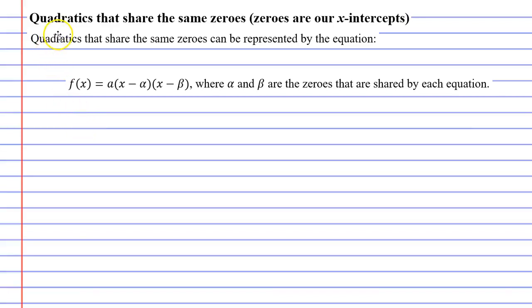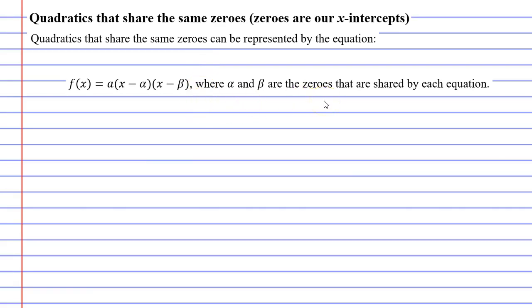In this video, we're looking at quadratics that share the same zeros. When we talk about zeros, it's the same thing as x-intercepts. Now, there are two parts to this video. In the first part, we're going to be looking at a special equation, and then in the second part, we're going to complete some examples.